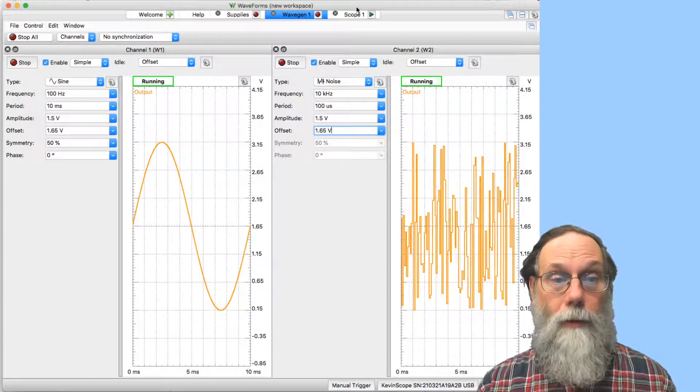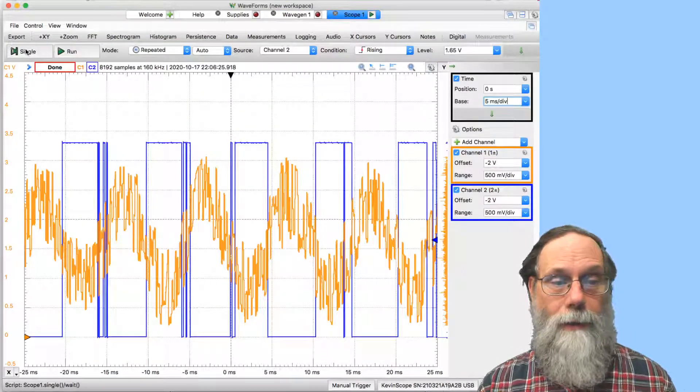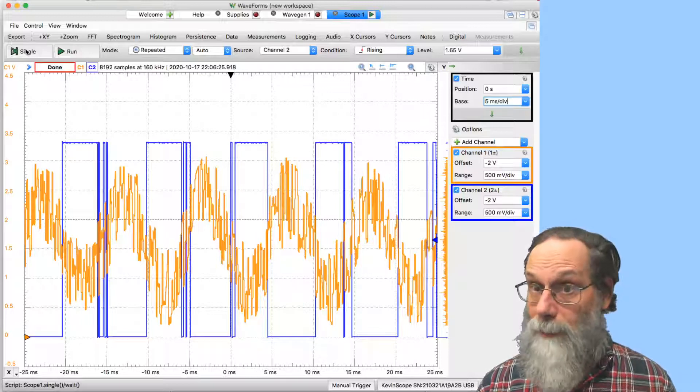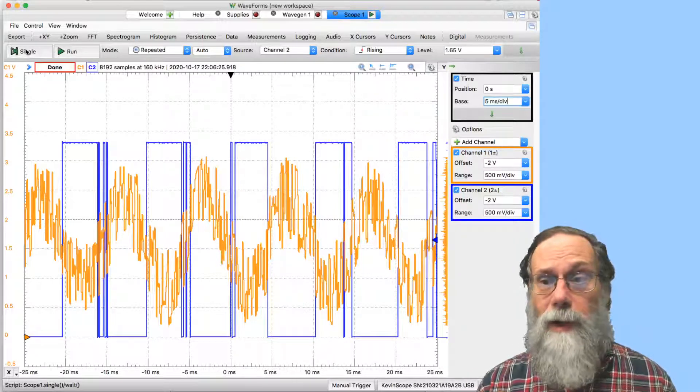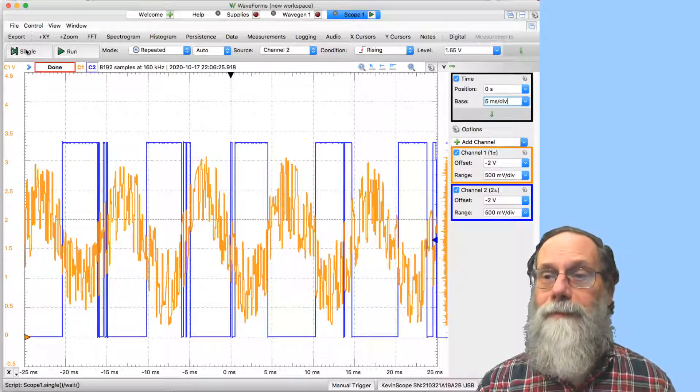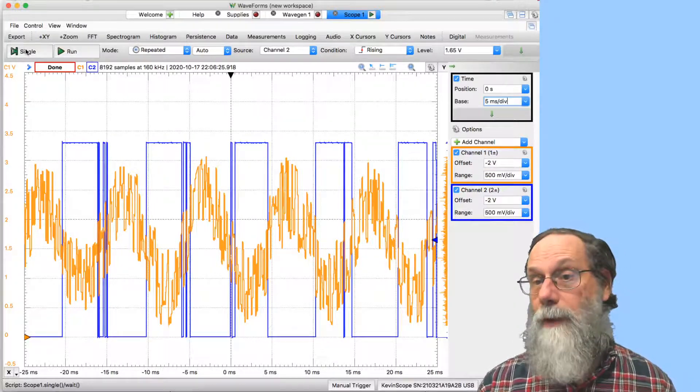Let's take a look at what that does. So we go over to the scope and we do a single run here. Now you can see we have a very noisy sine wave. You can still kind of see the sine wave because the noise is only the same magnitude as the sine wave itself.